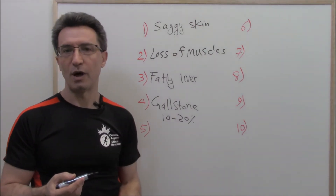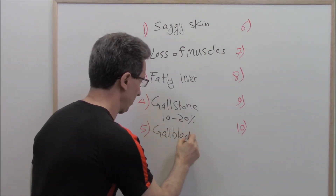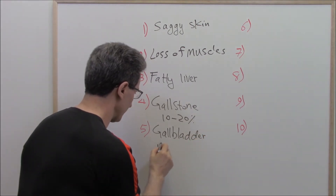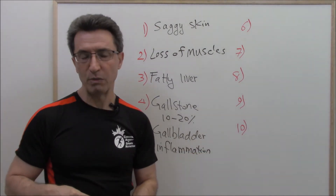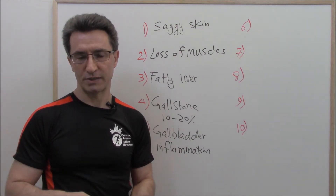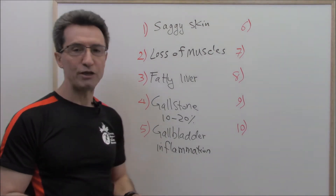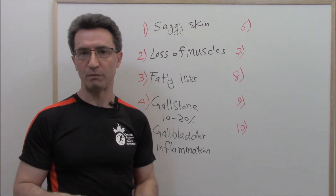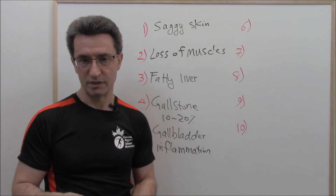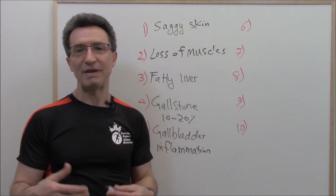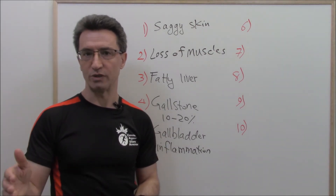Complication number five is gallbladder inflammation. It is well known in medicine that rapid weight loss can lead to gallbladder inflammation. This is especially true among people who undergo obesity surgeries. This is why there is a hot debate among surgeons about whether to remove the gallbladder at the same time as performing obesity surgery.